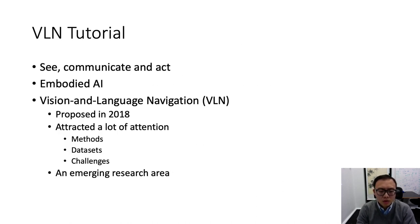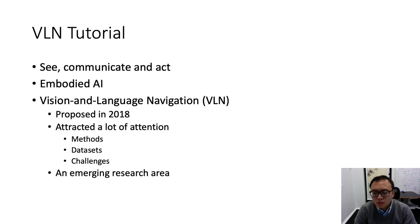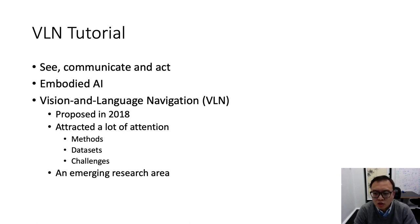A long-term goal of AI research is to build intelligent agents that can see the rich visual environment around us, communicate this understanding in natural language to humans and other agents, and act in a physical or embodied environment. Embodied AI, where agents are trained to perform various tasks in egocentric perception, has attracted a surge of interest within computer vision, natural language processing, and robotics communities. Vision and language navigation is one fundamental topic in embodied AI, proposed in 2018.